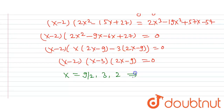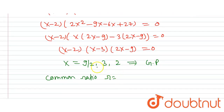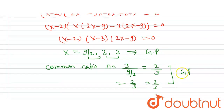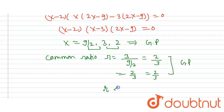The question says these roots are in geometric progression. Let's find the common ratio r. We know r equals the ratio of consecutive terms: r equals 3 divided by (9/2), which equals 3 times 2/9 equals 2/3. So we can see the terms 9/2, 3, 2 are in GP with common ratio 2/3, and since r equals 2/3 which is less than 1, the infinite sum formula applies.